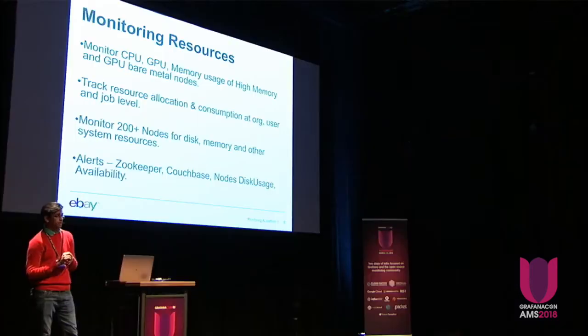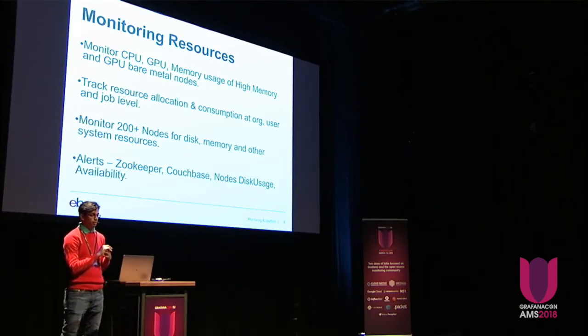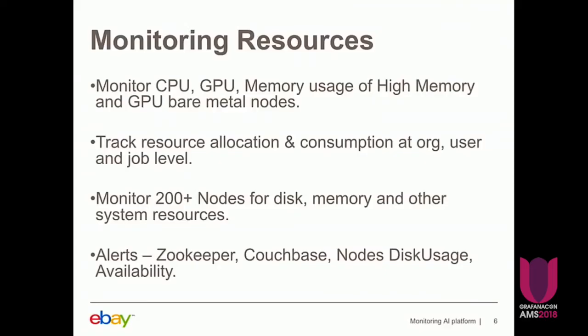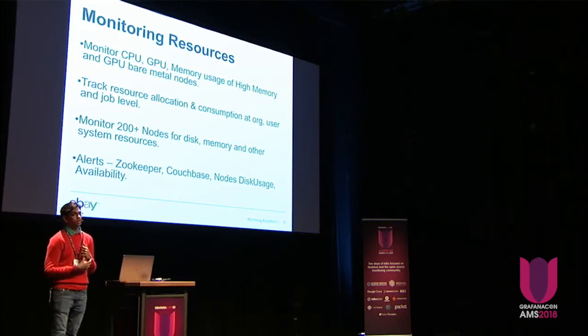In addition to tracking resource utilization at the job level, we also want to track it at the user level and the org level. Apart from monitoring machine learning and deep learning jobs, we want to monitor our own cluster to make sure it's highly available. We collect lots of metrics around disk, memory, and many system metrics of the entire 200-plus node cluster. We also use Zookeeper and Couchbase to make our AI platform highly available, and we have created alerts around key metrics.